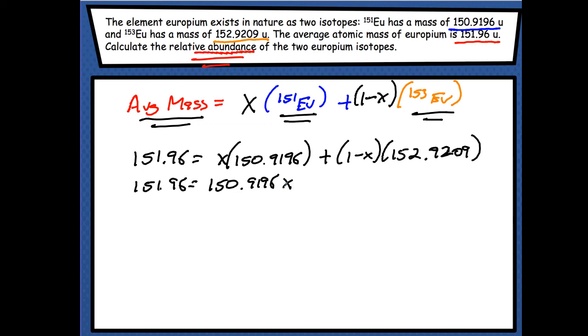So all I did was just switch my x over there. On this one, I'm going to distribute. So that's going to be 152.9209 because I'm distributing to that one first. Now, I'm going to distribute to that one minus 152.9209x.